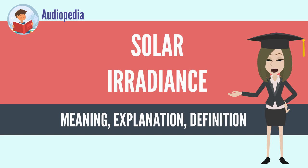Irradiance may be measured in space or at the Earth's surface after atmospheric absorption and scattering. Irradiance in space is a function of distance from the sun, the solar cycle, and cross-cycle changes. Irradiance on the Earth's surface additionally depends on the tilt of the measuring surface, the height of the sun above the horizon, and atmospheric conditions.